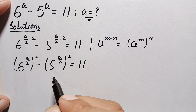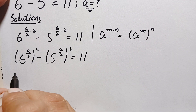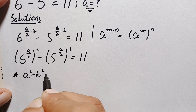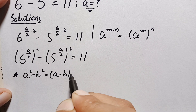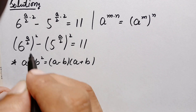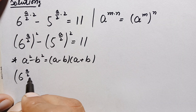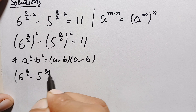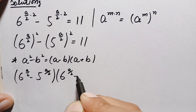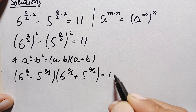Looking at the left hand side, it is in the algebraic form a squared minus b squared. We apply the identity a squared minus b squared equals (a minus b)(a plus b). So the left hand side becomes: 6 raised to power (a/2) minus 5 raised to power (a/2), times 6 raised to power (a/2) plus 5 raised to power (a/2), equal to 11.